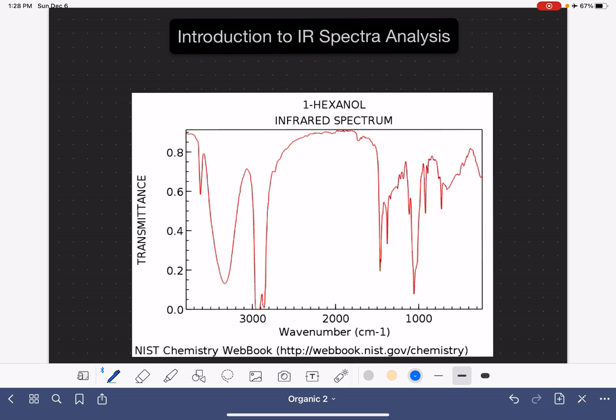When you're analyzing an IR spectrum, the very first thing that you should do is begin by drawing two lines: one line at the 1500 wavenumber mark, and then a second line at the 3000 wavenumber mark. We want to divide our spectrum up into three different parts. We're going to analyze these three different parts separately.